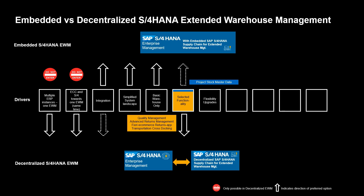Driver number seven. For some organizations, having the maximum flexibility to upgrade and add functionality independently of the maintenance schedule of the corporate ERP system may bring additional value. With S4HANA EWM, SAP is providing two feature packs per the yearly main release cycle. If the flexibility to adopt these features quickly is a priority, the decentralized option would probably be your choice.